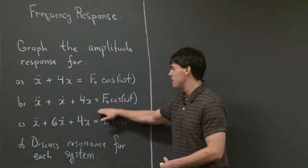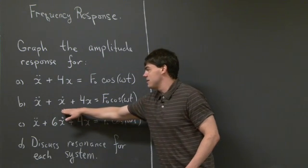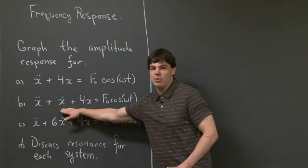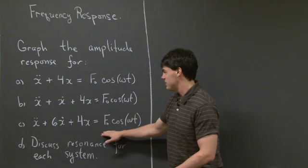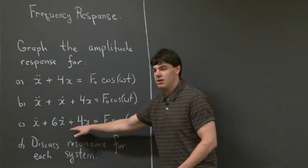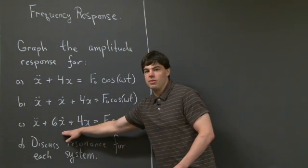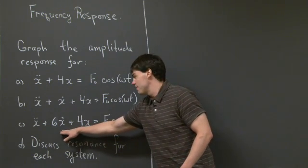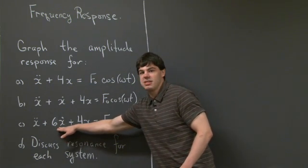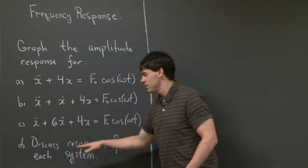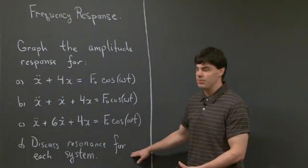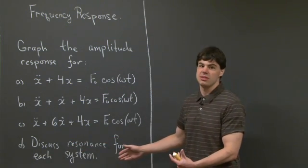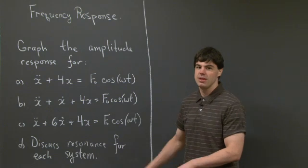For part b, it's the same equation, however we have an x-dot term added. For part c, again, we've increased the damping, so now we have 6x-dot. And then lastly, for part d, we'd like to discuss the resonance for each system.